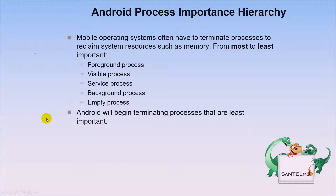Android's process importance hierarchy determines which processes are terminated first to reclaim memory. From most to least important: foreground process, visible process, service process, background process, and empty process. Android begins terminating the least important processes first. If you experience low battery or performance issues on a mobile device, closing applications you don't need frees resources — specifically RAM.